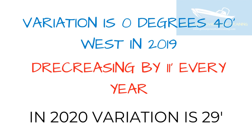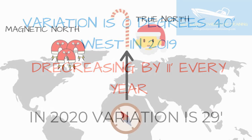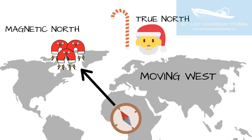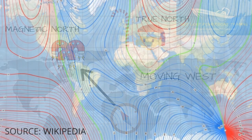Variation can move either east or west depending on where you are on the planet. If you take a look at this example where we are here in Africa, true north pointing dead upwards, the variation would be moving to the west. Take a look at this image sourced from Wikipedia — it shows the magnetic field across the planet. Variation changes wildly according to where you are.